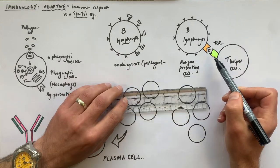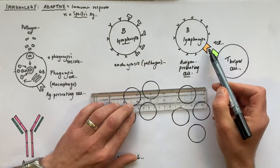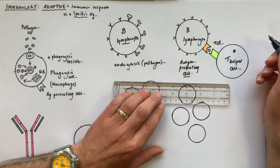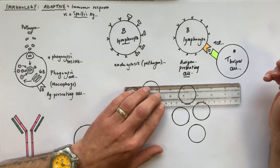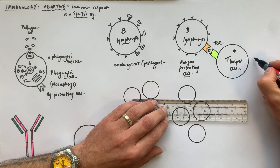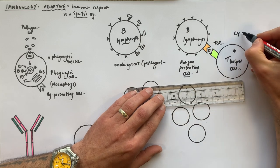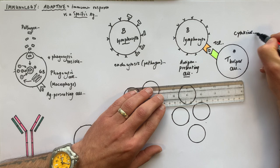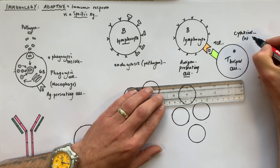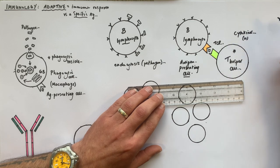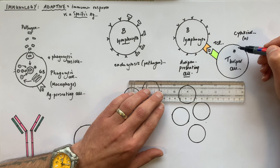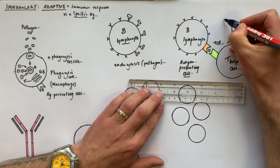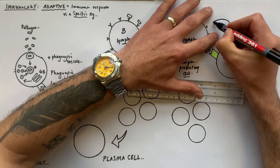Once we get this interaction between the T cell receptor and the presented antigen, that activates the T helper cell to make chemicals called cytokines. Cytokines — sometimes you might see the word interleukin, which is just a certain type of cytokine — are made and secreted by the T helper cell.